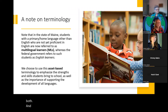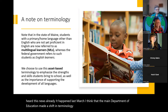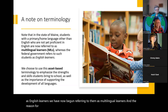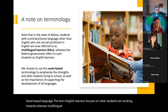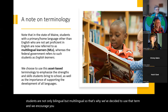An important note: last March the Maine Department of Education made a shift in terminology. Whereas in the past we spoke about students as English learners, we now refer to them as multilingual learners. This change is deliberate and intentional in using asset-based language. The term 'English learners' focuses on what students are working towards, whereas 'multilingual learners' focuses on what they have as assets. Many of our students are not only bilingual but multilingual, so we encourage you to adopt this term in your own setting.